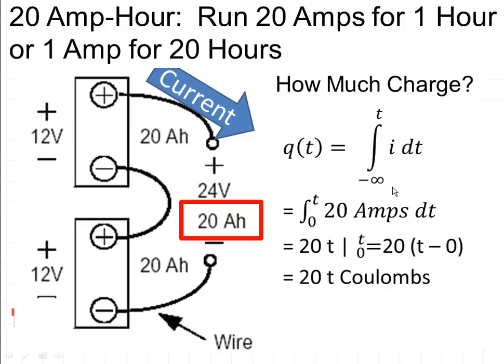So how much charge is that? Well, we'd be integrating from the earliest possible time. Let's say that's when I turn on my device at time t equal to zero, up to the present, and I would run 20 amps for that length of time. So it's 20T, when you multiply this all out, it's 20T coulombs.